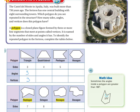Next, let's look at the quadrilateral. Sides: one, two, three, four — four sides. Let's look at our angles: one, two, three, four — four angles. Now vertices — remember, that's the endpoint. One, two, three, four — so it has four vertices.